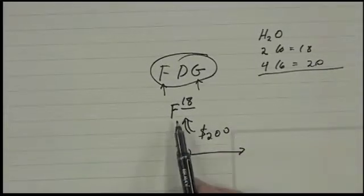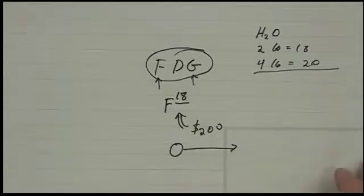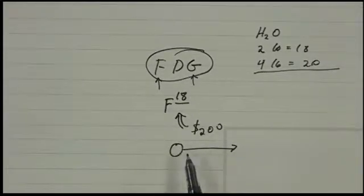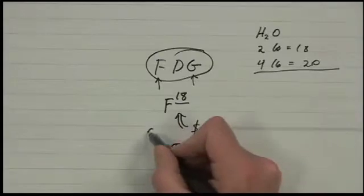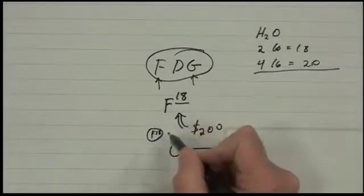When it breaks down, well, there's various things that happen. Okay, so I'm going to oversimplify this. But when it breaks down, it releases a, so this is the F18 here. When it breaks down, it releases a positron.